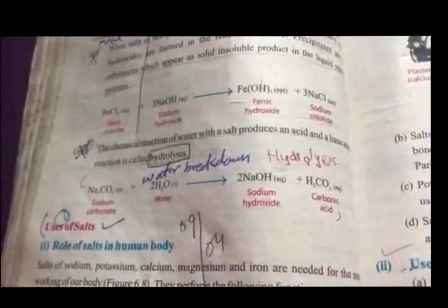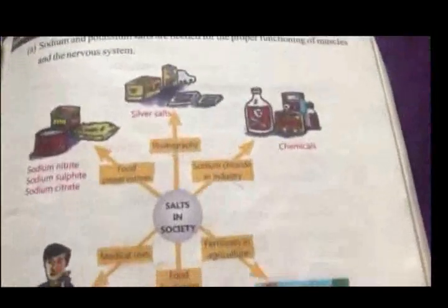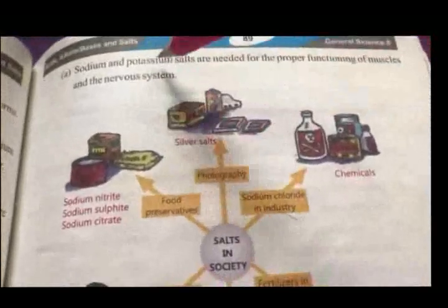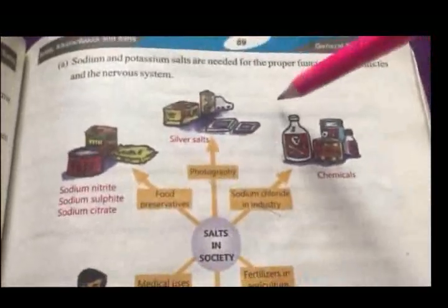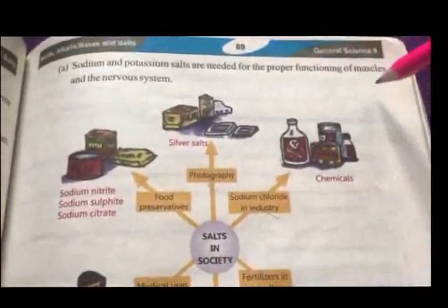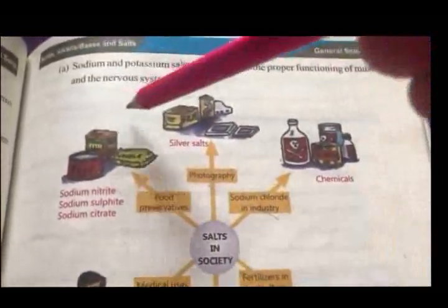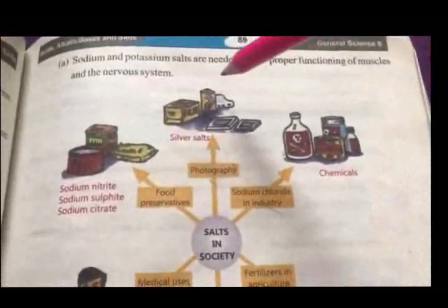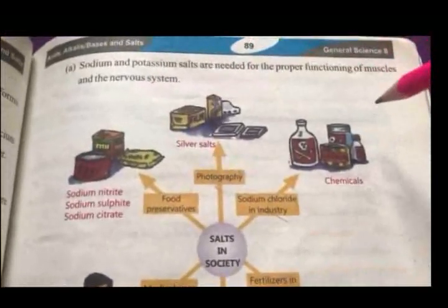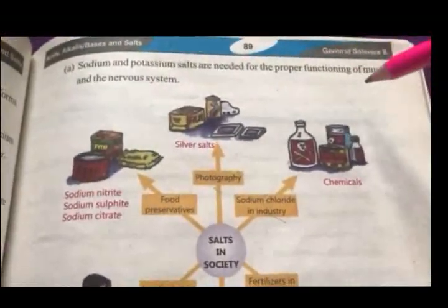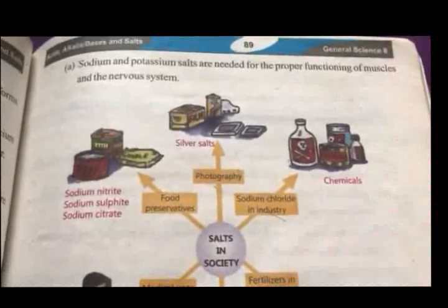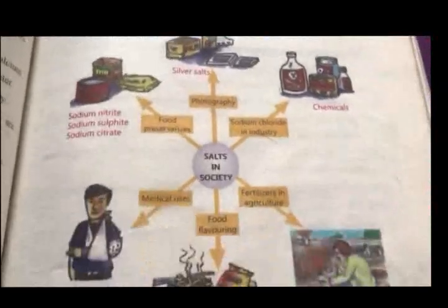First, the role of salts in our human body — which salts are in our body and what they are used for. Sodium and potassium salts are needed for the proper functioning of muscles and the nervous system. Potassium and sodium salts are needed for our muscles and nervous system to work.